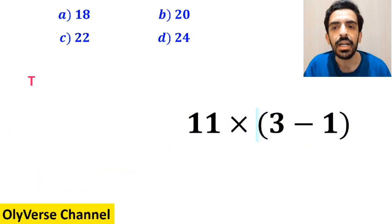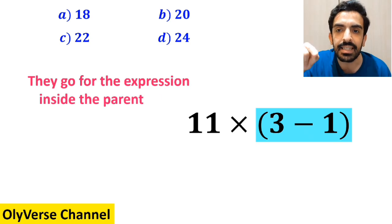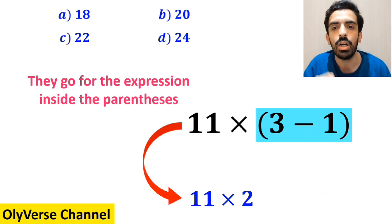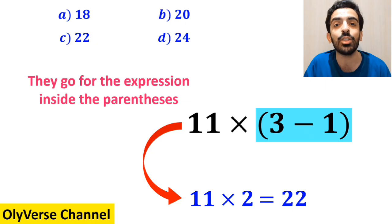And the final step, they go for the expression inside the parenthesis and replace it with 11 times 2, which ultimately gives them the answer 22.